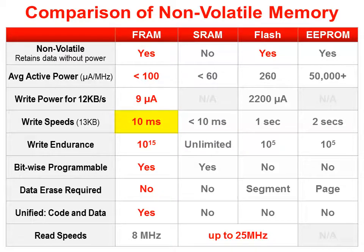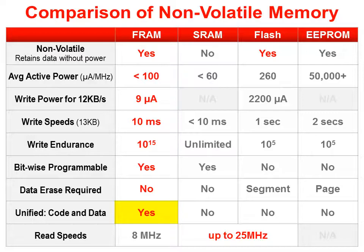Second, you can write data significantly faster with FRAM. Third, just look at that endurance number — we haven't actually worn one out yet. And finally fourth, it's just so flexible. Since you can read and write to it as easily as SRAM, you can use it for either purpose: storing program code or temporary variables. The low power, high-speed writes of FRAM are a natural for many applications.